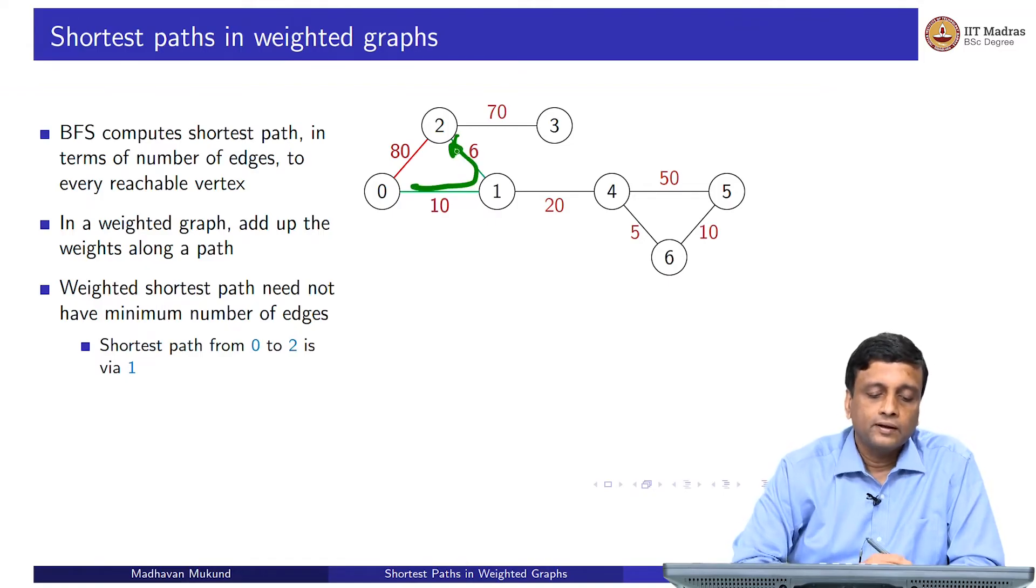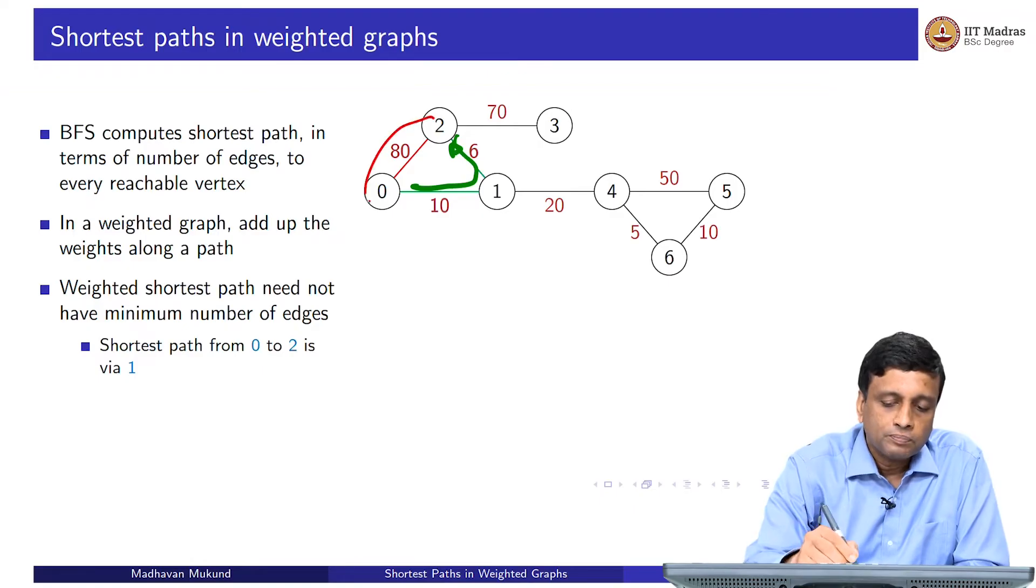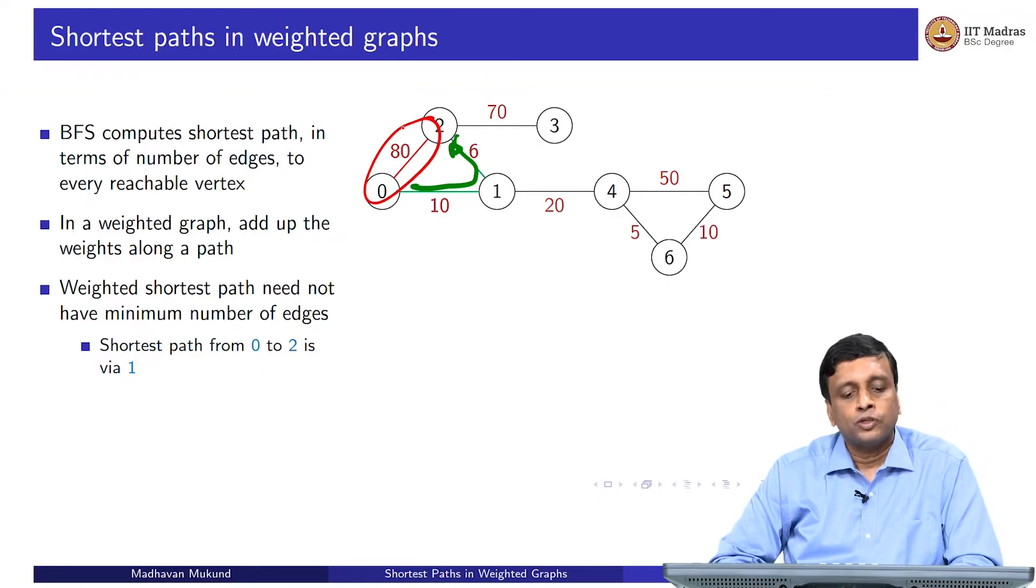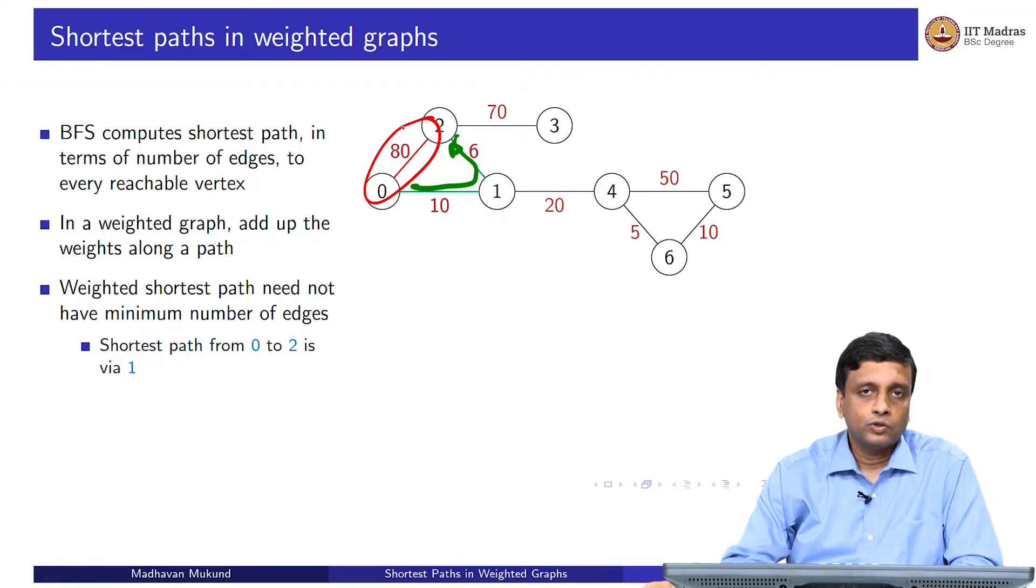It is a two stop path. Whereas, if I take the shortest path in terms of number of edges, I can go directly from 0 to 2, but it will cost me 80. You can imagine if you have bought flight tickets sometimes this happens - a direct flight is more expensive than a flight which hops because it is more inconvenient for the passenger and possibly goes through less serviced destinations. This is not something which is unusual, this is something that we do encounter in real life. We can just say that there is no direct way of correlating the number of edges on the path with the total weight of the path. We need a separate strategy in order to find shortest paths in weighted graphs.